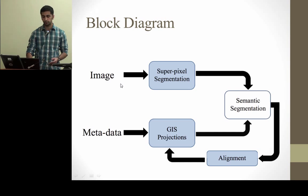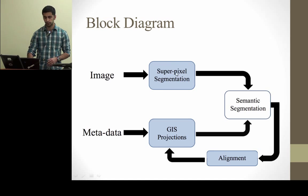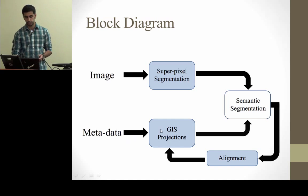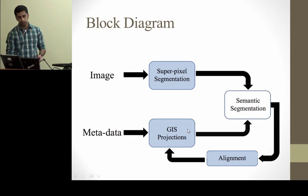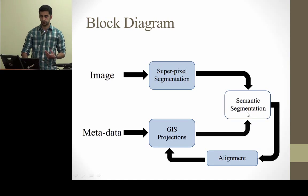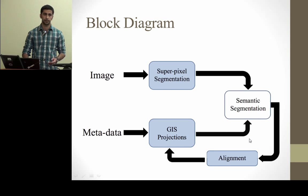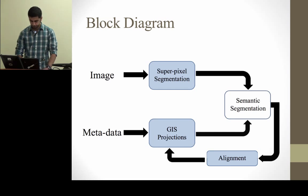One resource is the image content, on which we perform superpixel segmentation. In the other part we use the metadata and GIS data and fuse them together to get semantic segments. Then we use an iterative process to further align the projections and improve the quality of our semantic segmentation.